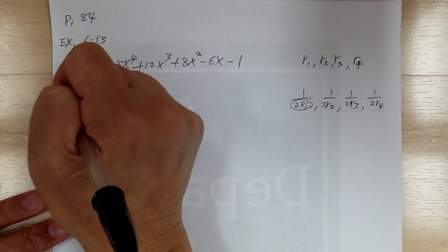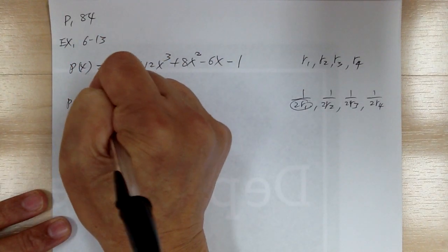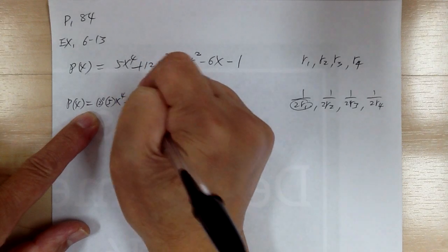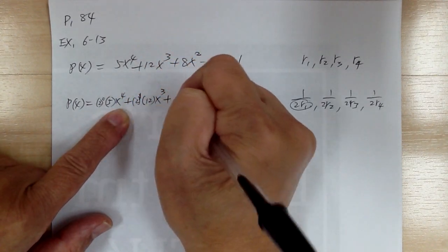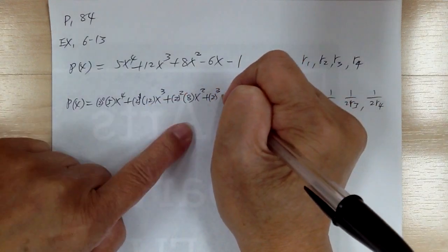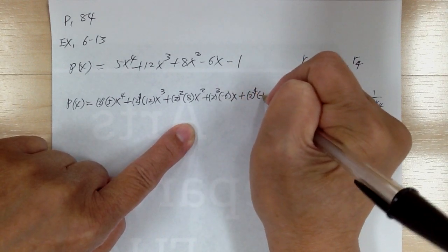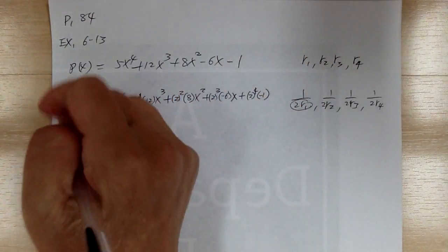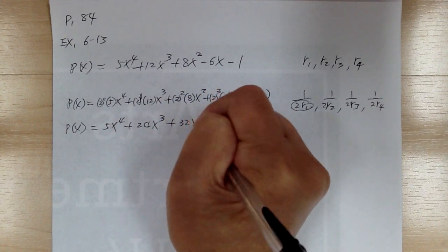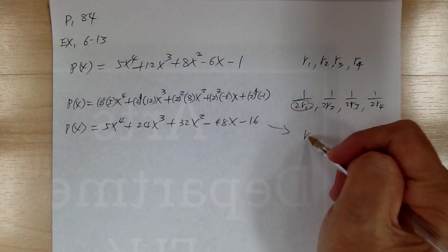To double the roots of P(x) = 5x to the four plus 12x cubed plus 8x squared minus 6x minus 1: multiply by two to the zero, two to the one, two to the two, two to the three, and two to the four respectively. This gives P(x) = 5x to the four plus 24x cubed plus 32x squared minus 48x minus 16. That's the polynomial with doubled roots.